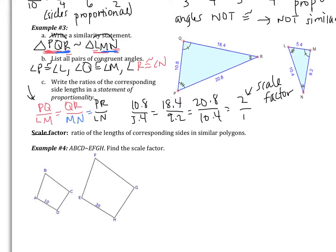The scale factor is the ratio of the lengths of the corresponding sides in similar polygons. In the example we just did, the scale factor was 2 to 1. Looking at example 4, think for a moment if you can find the scale factor. We are told the figures are similar, and we're only given two sides: 10 and 20. So the scale factor is 10 over 20, which simplifies to 1 over 2 — the scale factor is 1/2.